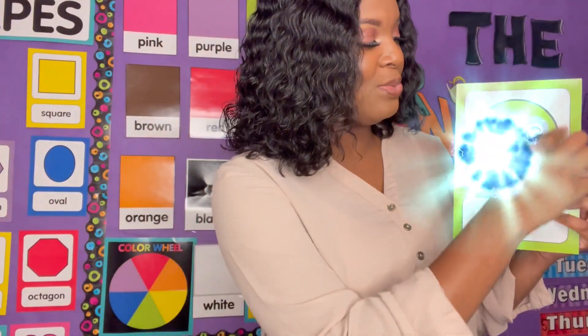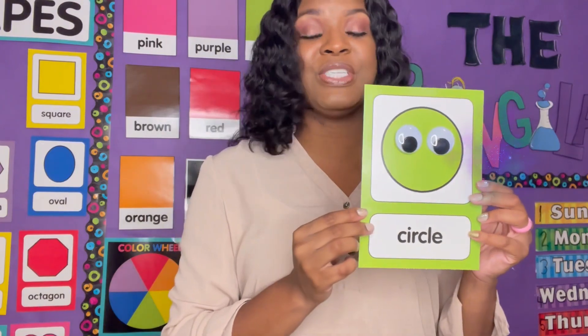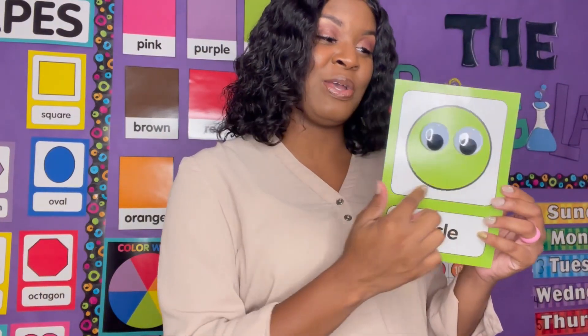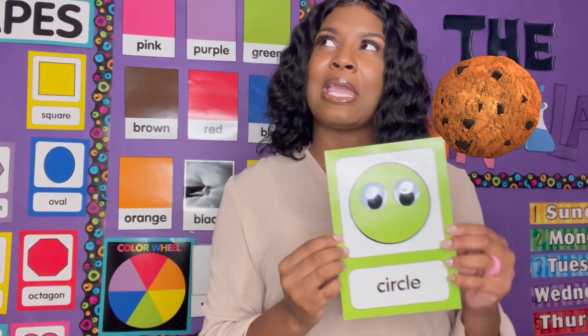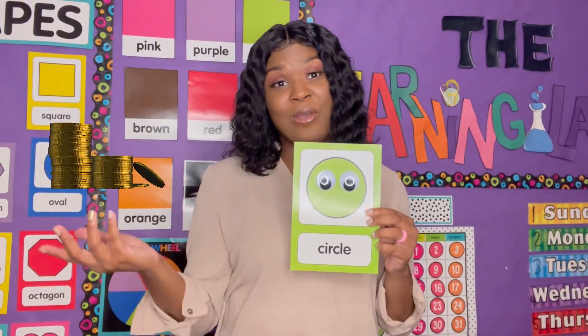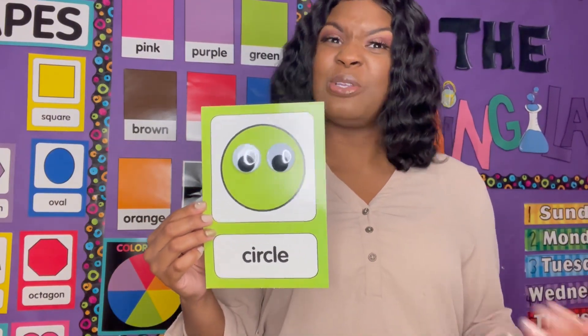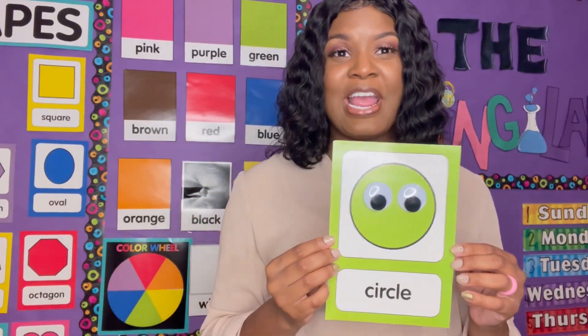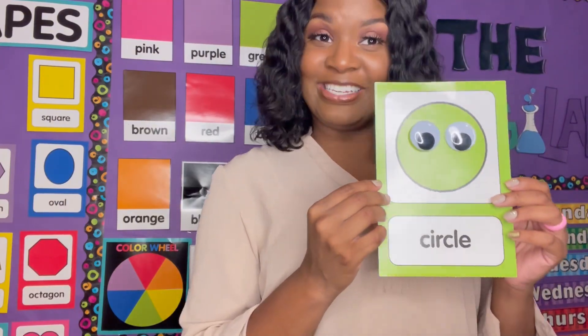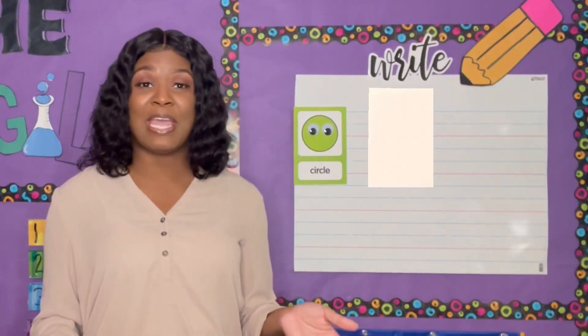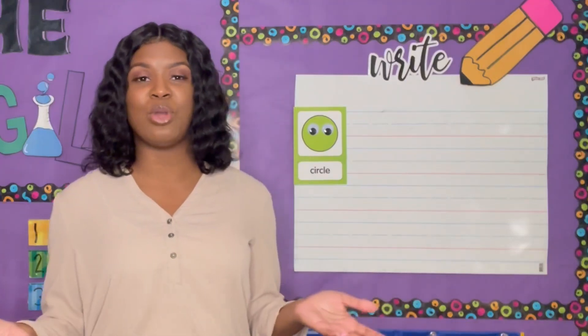A circle is round. A circle does not have any sides or corners — it's just round. Kind of like a cookie or coin. Now the circle is one of the easiest shapes that we're going to learn about. So let's head over to our writing board and practice drawing a circle. If you have paper and pencil at home, or a dry erase board and a dry erase marker at home, feel free to follow along with me.